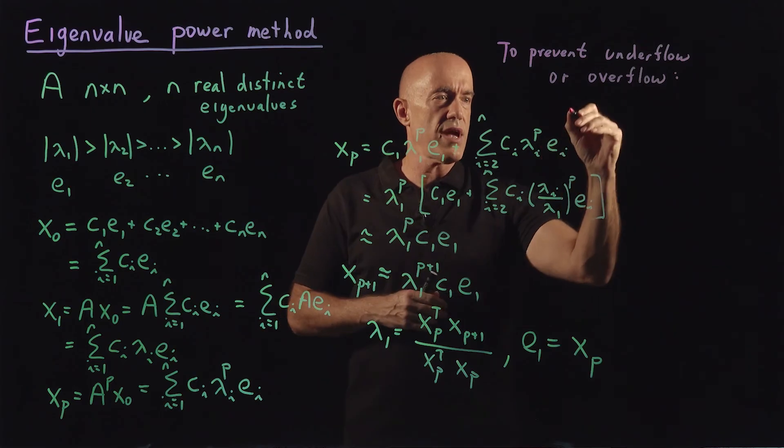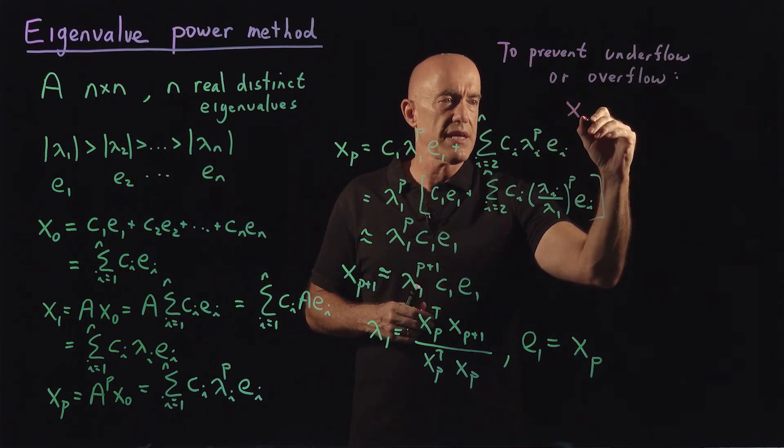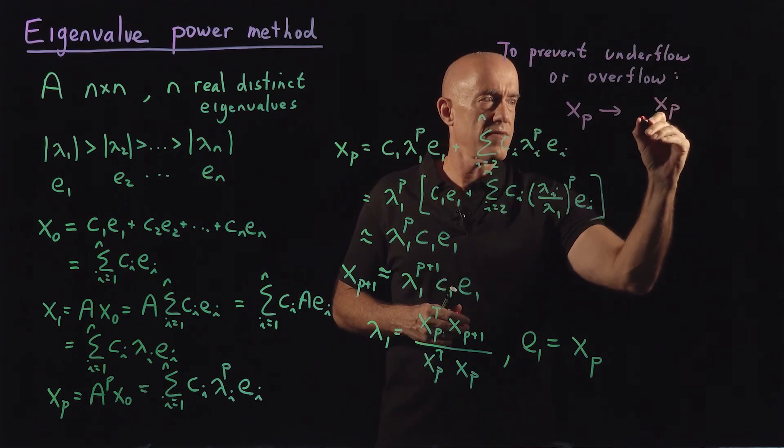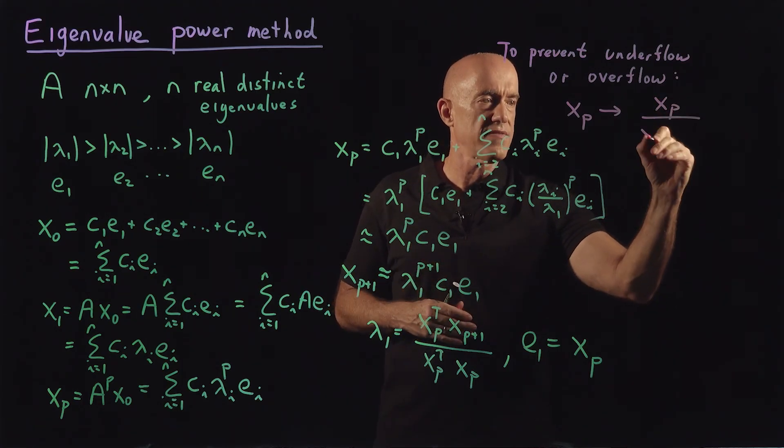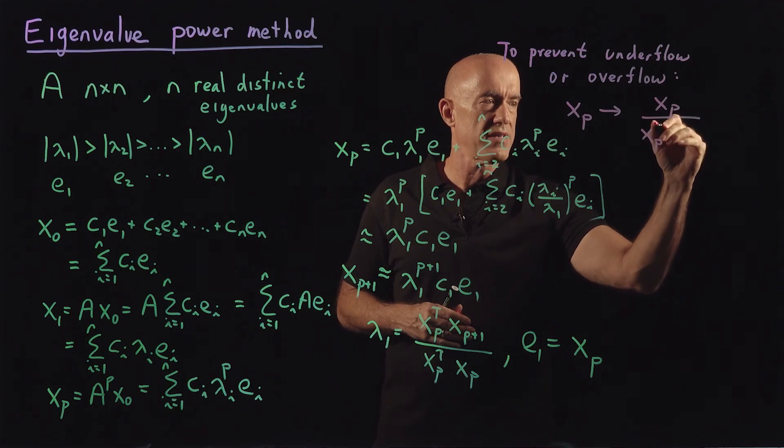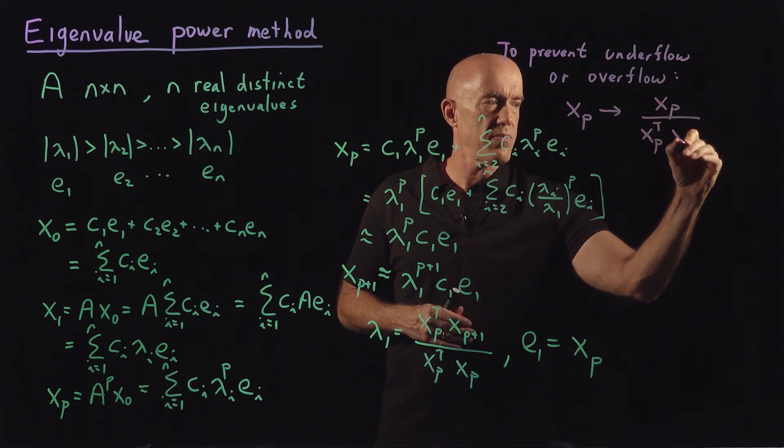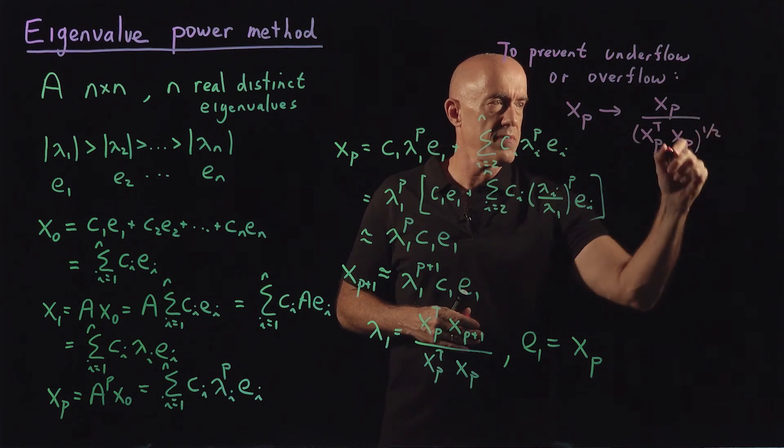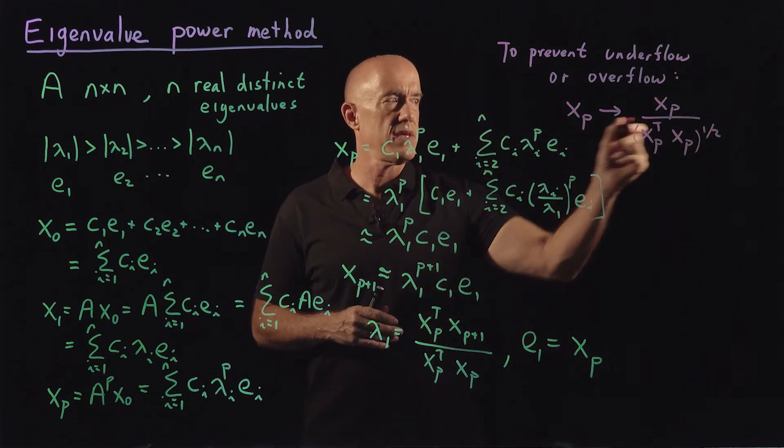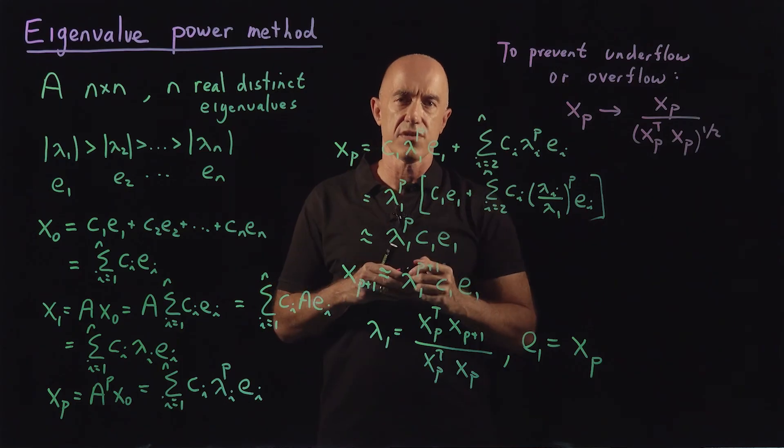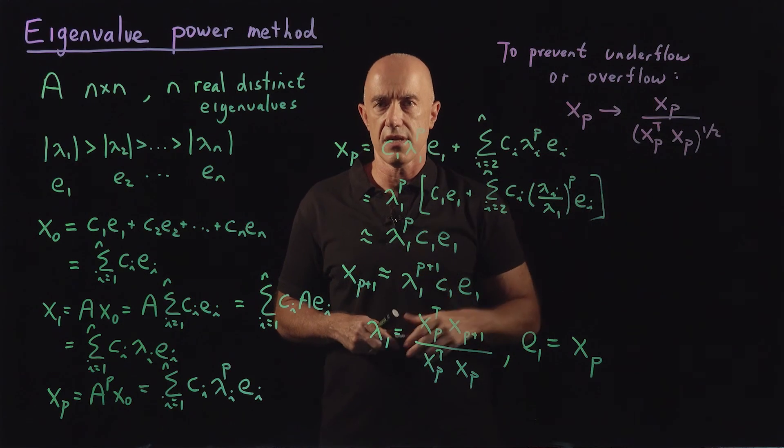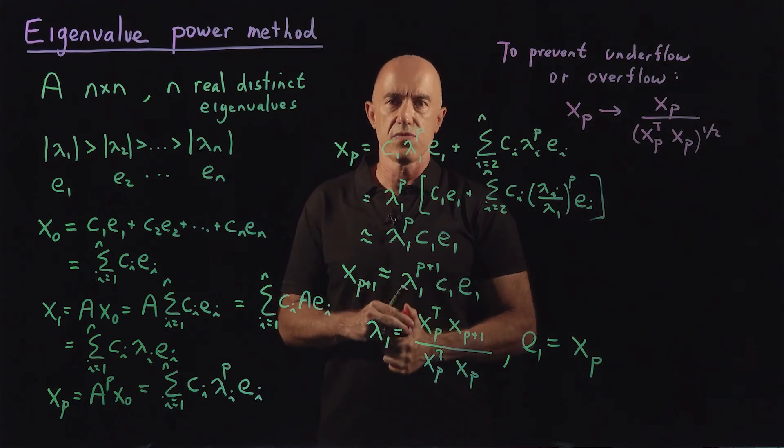With each iteration, instead of keeping x p, you can send x p to x p divided by a normalized value. So you can normalize by x p transpose x p to the one half. So essentially the length of x p. And that stops the values from overflowing or underflowing. So just a little extra trick in the numerics.